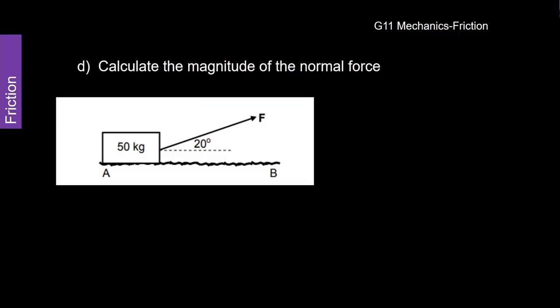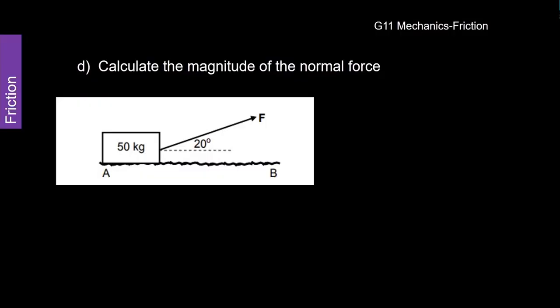So it says here, calculate the magnitude of the normal force. Well, we've already found out what the expression is for the normal force and this is what it was. We found out that it was, so the normal force is equal to 490 minus 0.34 F.